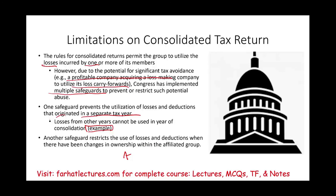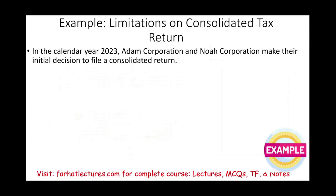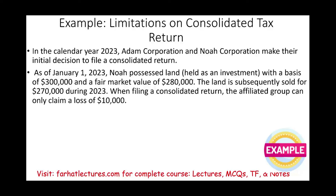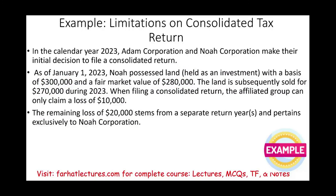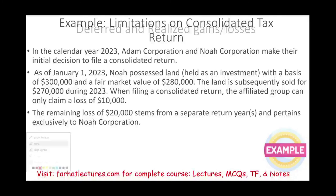Here's an example: in calendar year 2023, Adam Corporation and NOAA Corporation made their initial decision to file a consolidated return. On January 1st, NOAA had land with a basis of $300,000 and a fair market value of $280,000 — a built-in loss of $20,000. The land was subsequently sold for $270,000 during 2023. When filing the consolidated return, the affiliated group can only claim $10,000 of losses. The remaining $20,000 stems from a separate return year and pertains exclusively to NOAA Corporation, not the consolidated group.